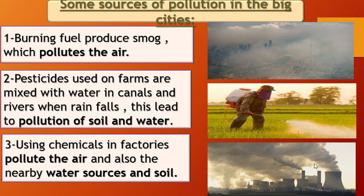Number three: using chemicals inside factories. Factories use chemicals in machines to produce daily-life products, but these chemicals produce smoke that pollutes the air. If there is water or soil nearby the factories, they will also pollute the water and soil, not air only.